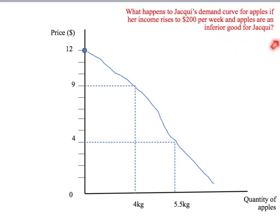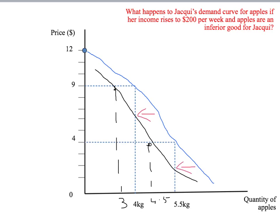But what if apples were an inferior good for Jackie? Her income has gone up, but since apples are inferior, she wants to buy fewer apples at any price. At $9 per kilo she might now only want 3 kilograms, and at $4 per kilogram she might only want 4.5 kilograms. Joining these points gives Jackie's new demand curve, which lies everywhere to the left of the original — as income rises, she buys less of an inferior good.